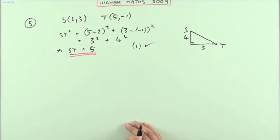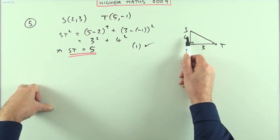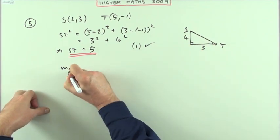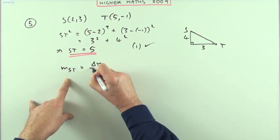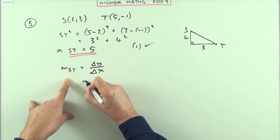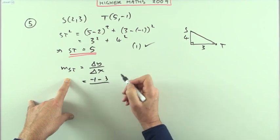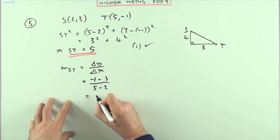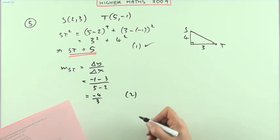The gradient of ST is 4 upon 3. Well, I've got the numbers there. I've got the distance up and the distance along. I could get the gradient straight away. If I was just working it out from the beginning, I would say it'll be the difference in the y-coordinates divided by the difference in the x-coordinates. So that would be negative 1 take away 3, over 5 take away 2, which gives me negative 4 upon 3.